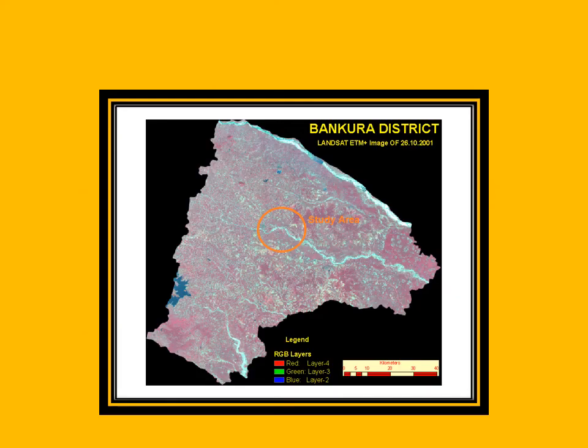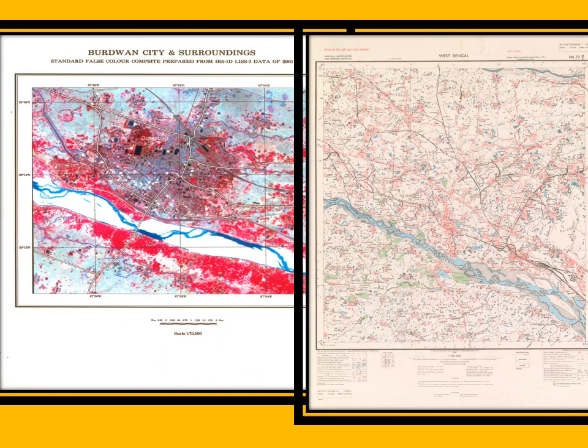This is an imagery of the RGB band of macro-realistic West Bengal. It is a satellite imagery with standard false color composition. The area is very similar to a 1:50,000 topographical map with an RF of 1:50,000. The river shown is the Damodar, and the town is Burdwan.